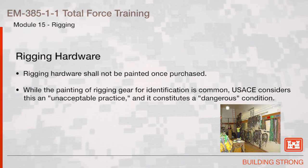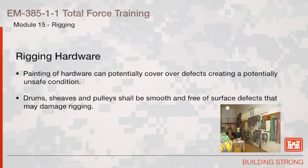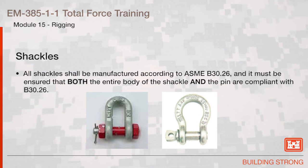Rigging Hardware. Rigging hardware should not be painted once purchased. While the painting of rigging gear for identification is common, USACE considers this an unacceptable practice and a dangerous condition, as painting of hardware can potentially cover defects. Drums, sheaves, and pulleys shall be smooth and free of surface defects that may damage rigging. All shackles must be manufactured according to ASME B30.26, and it must be ensured that both the entire body of the shackle and the pin are compliant with B30.26.